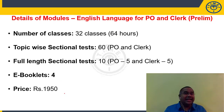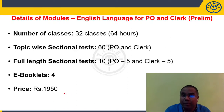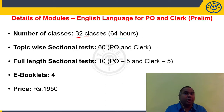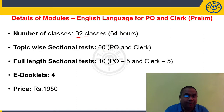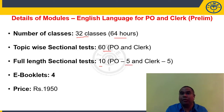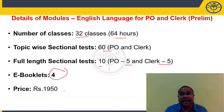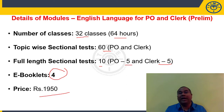For English language for probationary officers and clerks, we are offering a prelim module comprising 32 classes, that is 64 hours total duration. You will get 60 topic-wise sectional tests on PO and clerk patterns, and 10 full-length sectional tests — 5 on PO pattern and 5 on clerk pattern. You will get four e-booklets in total and the price of this module is 1950 rupees.